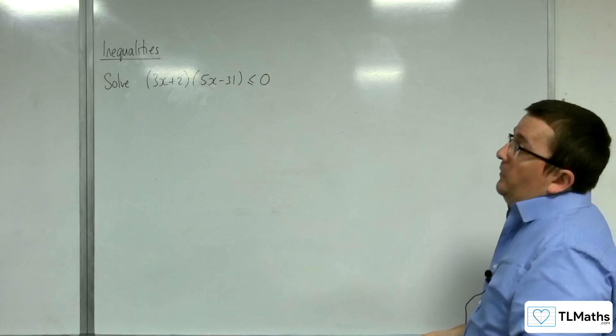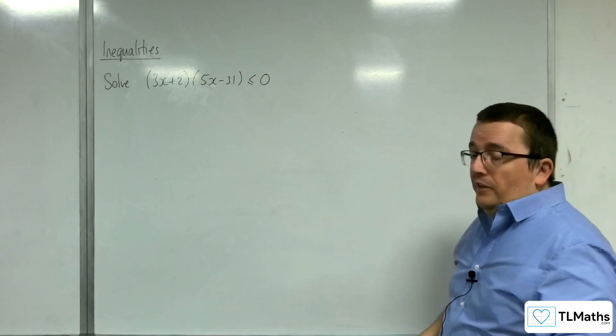So in this example, we need to solve (3x + 2)(5x - 31) is less than or equal to 0.